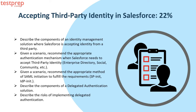Fifth, describe the risks to enterprise security that federated single sign-on solutions aim to address. Sixth, given a scenario, troubleshoot common points of failure in a single sign-on solution — SAML, OAuth, etc. Number two: Accepting Third-Party Identity in Salesforce, 22%. It contains: first, describe the components of an identity management solution where Salesforce is accepting identity from a third party. Second, given a scenario, recommend the appropriate authentication mechanism when Salesforce needs to accept third-party identity — enterprise directory, social, community, etc. Third, recommend the appropriate method of SAML initiation — SP-initiated or IdP-initiated. Fourth, describe the components of a delegated authentication solution. Fifth, describe the risks of implementing delegated authentication.